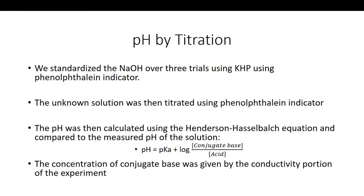We standardized our NaOH over three trials using KHP, and used phenolphthalein as our indicator because we were going from an acidic solution to a neutral or basic solution. Once we had standardized our NaOH, we titrated our citric acid — again using phenolphthalein — to determine the concentration of the citric acid. We did both the standardization and the titration in three trials to determine our average values.